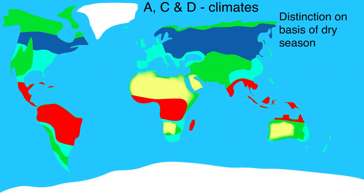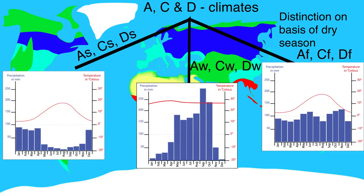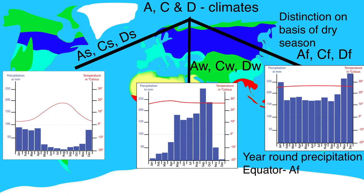Within the A, C, and D climates a distinction is made based on the season in which there is hardly any precipitation. A small letter F, W, or S is added to these climates. The F stands for the failure of a drought season — because the drought season is absent, precipitation is evenly distributed throughout the year. In Northwestern Europe there is a CF climate: it is a sea climate and the precipitation is evenly distributed throughout the year. At places around the equator there is often an AF climate — it is tropical and it rains all year round.